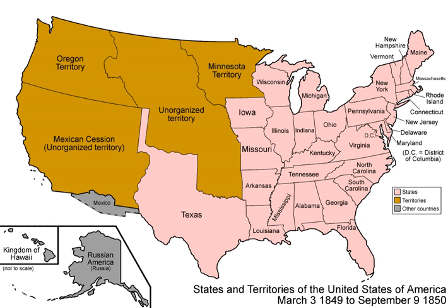See also: Uncle Tom's Cabin, a reaction against the Fugitive Slave Law; and the Kansas–Nebraska Act of 1854, which reopened the slavery issue.